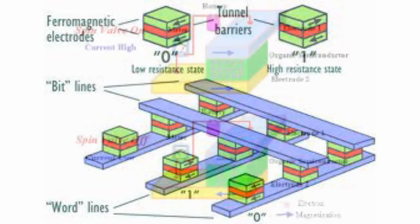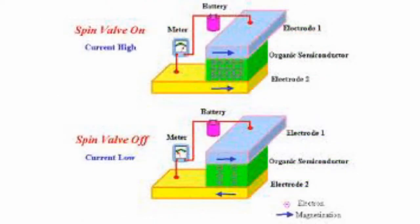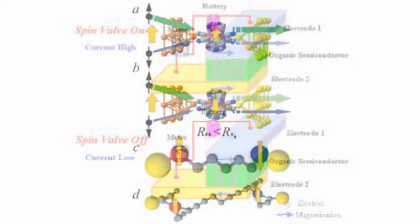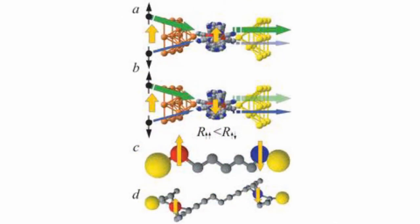The elements are formed from two paramagnetic plates separated by a thin insulation layer. Each of the plates can hold a magnetic field element. One of the two plates is a permanent magnet set to a particular polarity, while the other's field can be changed by exposure to an external field in order to store memory. This configuration is known as a spin valve and is the simplest structure for an MRAM bit.